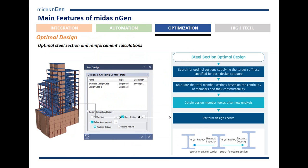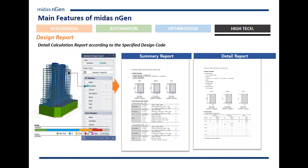For steel, the program can find you the optimal section based on the specific target ratios you request. For concrete, it can automatically do the rebar distribution as well.